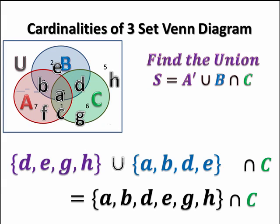Now we find the union of d, e, g, h with a, b, d, e. Union means unite, put everything together into one big happy family. So we're left with a, b, d, e, g, h.